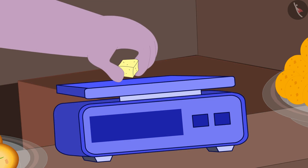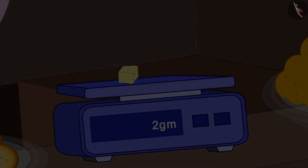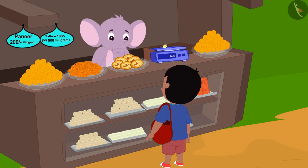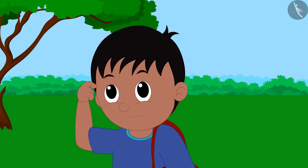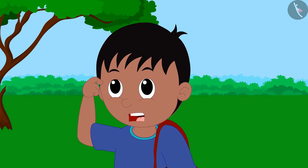Appu then placed 2 grams of paneer on a weighing scale and said to Raju, Look Raju, will your mother be able to make any dish using it? No, looks like I swapped the units of these 2 items.